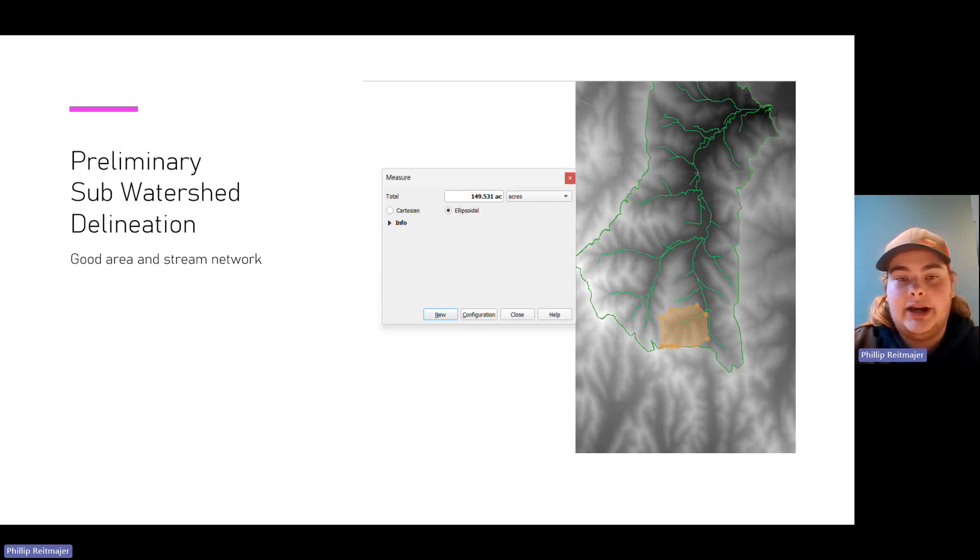My preliminary sub-watershed delineation is just choosing a watershed that looked alright. This is a good network of channels and it's about the right area at 149 acres using my eyes.